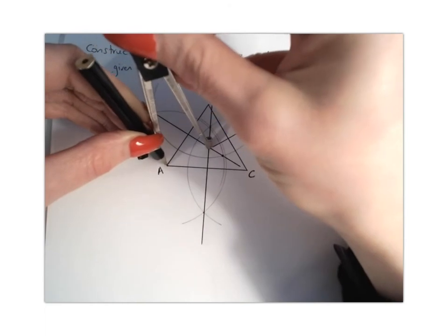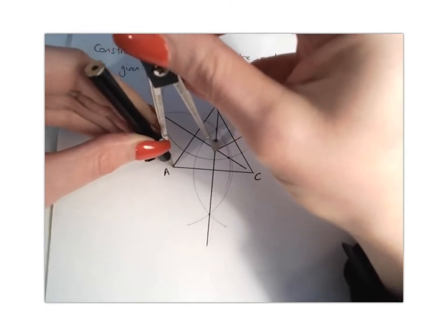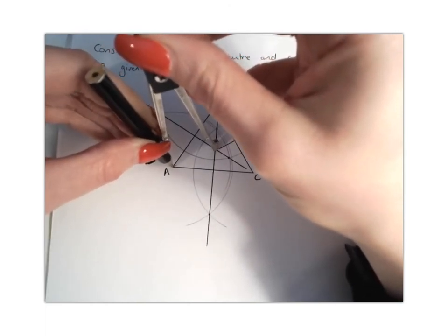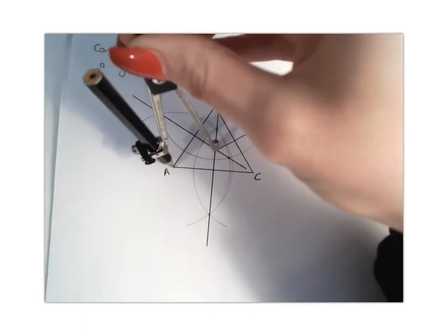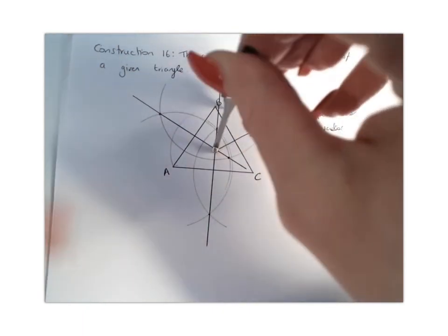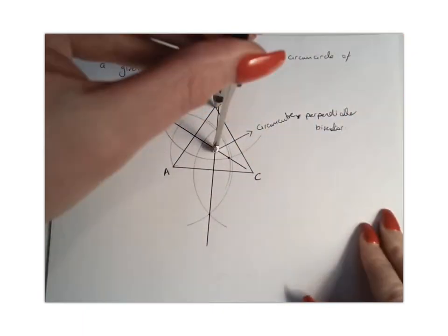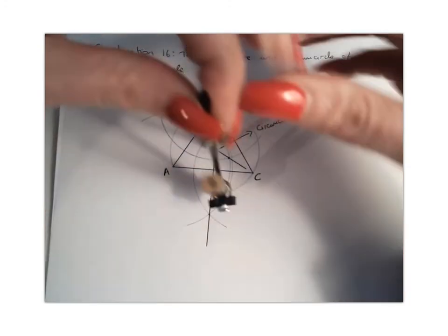Once you've got it set up like this, and hopefully you've done it accurately enough, when we draw our circle it should hit points A, B, and C.